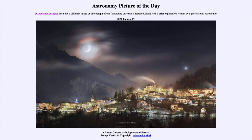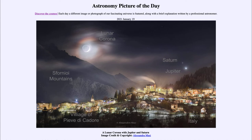We can annotate this image — you can see the lunar corona as well as the mountains and the village down below. And off to the right we see two other bright objects, and those are two planets: Jupiter and Saturn.